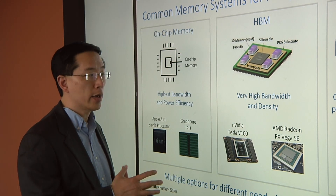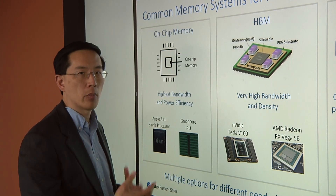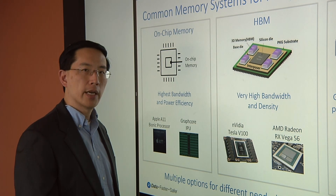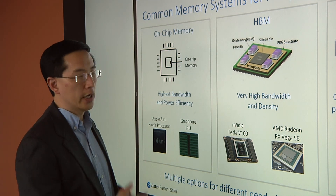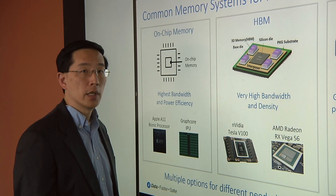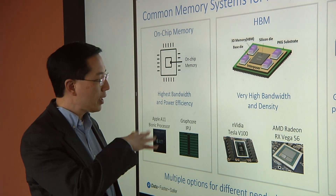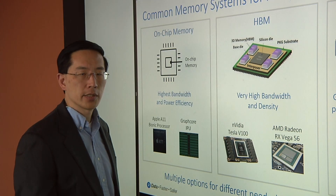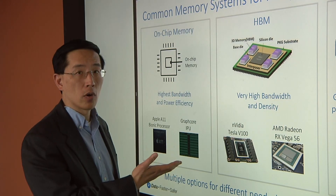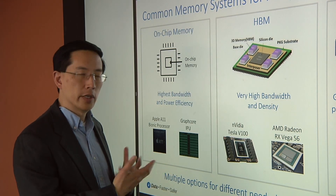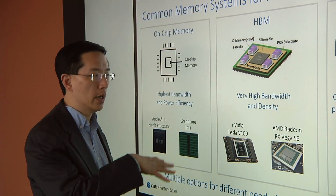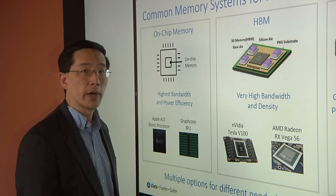On-chip memory actually has the benefit of having the highest bandwidth and the best power efficiency, and it's a good option if you can put enough memory onto your chip. This is typically SRAM. There are a couple of great examples out there in the industry. A lot of cell phone processors use on-chip memory, things like Apple's Bionic processors used in the iPhone. There are also folks like Graphcore who are building an IPU — an intelligence processing unit — where they're putting a tremendous amount of SRAM directly on the chip, on the order of a few hundred megabytes.